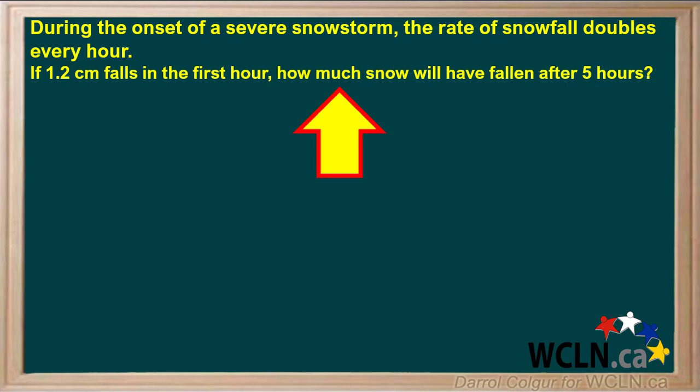During the onset of a severe snowstorm, the rate of snowfall doubles every hour. If 1.2 cm falls in the first hour, we're asked how much snow will have fallen after five hours. We're considering a period of five hours, so we can say that n equals 5.